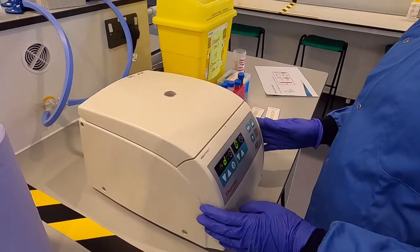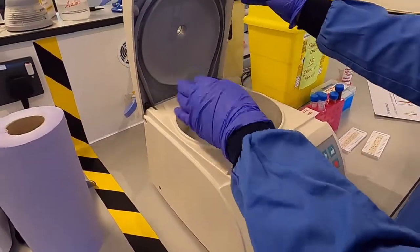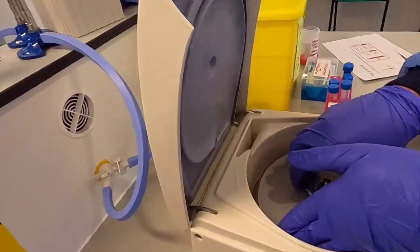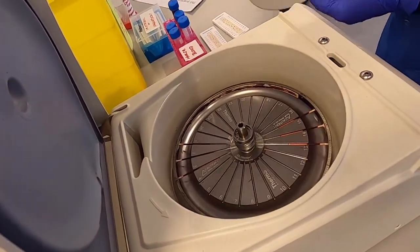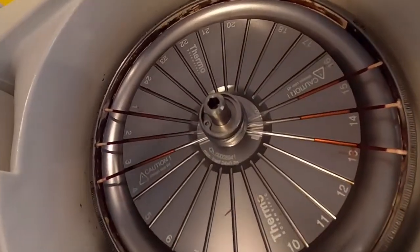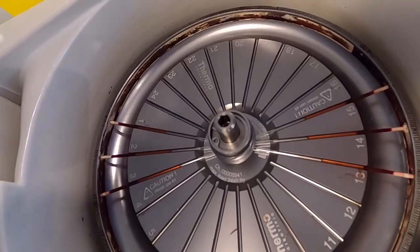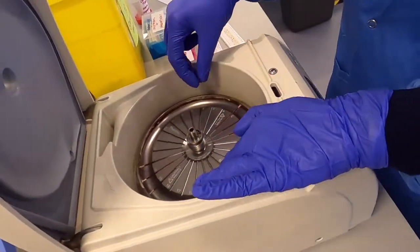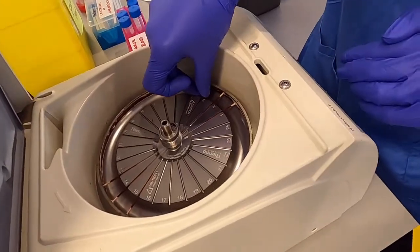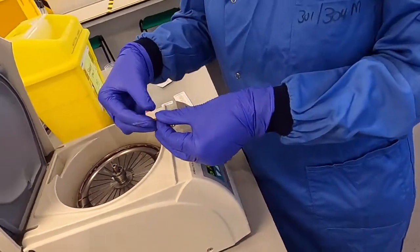That beep indicates that our centrifuge has finished. We then just need to pop the lid open. Very carefully unscrew the lid and then you can see that the blood has separated into the different layers in the capillary tubes. I'm going to take out this capillary tube here that's in slot number 3 very carefully. We don't want to have any breakages of glass. Obviously all glass breakages would need to go into the sharps bin.